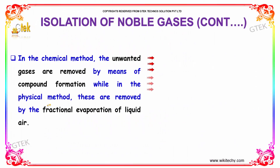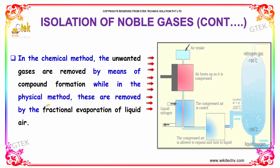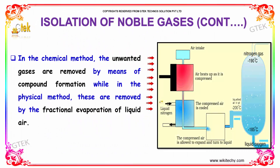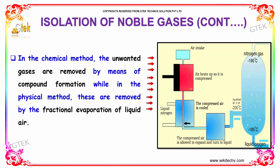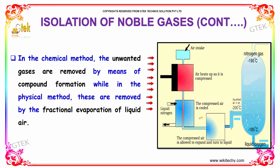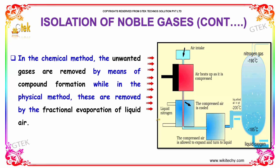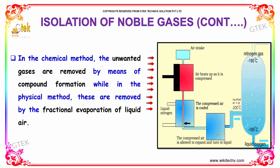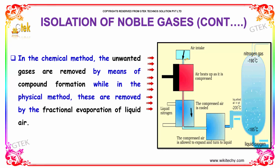In the chemical method, the unwanted gases are removed by means of compound formation, while in the physical method these are removed by the fractional evaporation of liquid air.